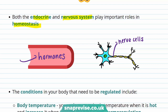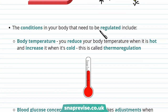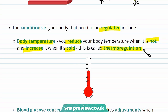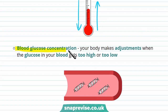So what do we need to keep constant? Some of the conditions your body needs to regulate are body temperature — you reduce your body temperature when it's hot and increase it when it's cold. This is called thermoregulation. For example, if it's really cold outside and your body temperature drops, your body acts to increase it again by actions such as shivering.